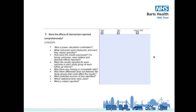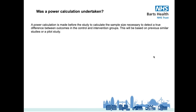The very first consideration point asks: was a power calculation undertaken? A power calculation is made before the study begins to calculate the sample size needed to detect a true difference between outcomes in the control and intervention groups. This will be based on previous similar studies or a pilot study. If previous similar research identified that the intervention has a small effect, then a power calculation based on that would result in a larger sample size being required to detect that small effect.